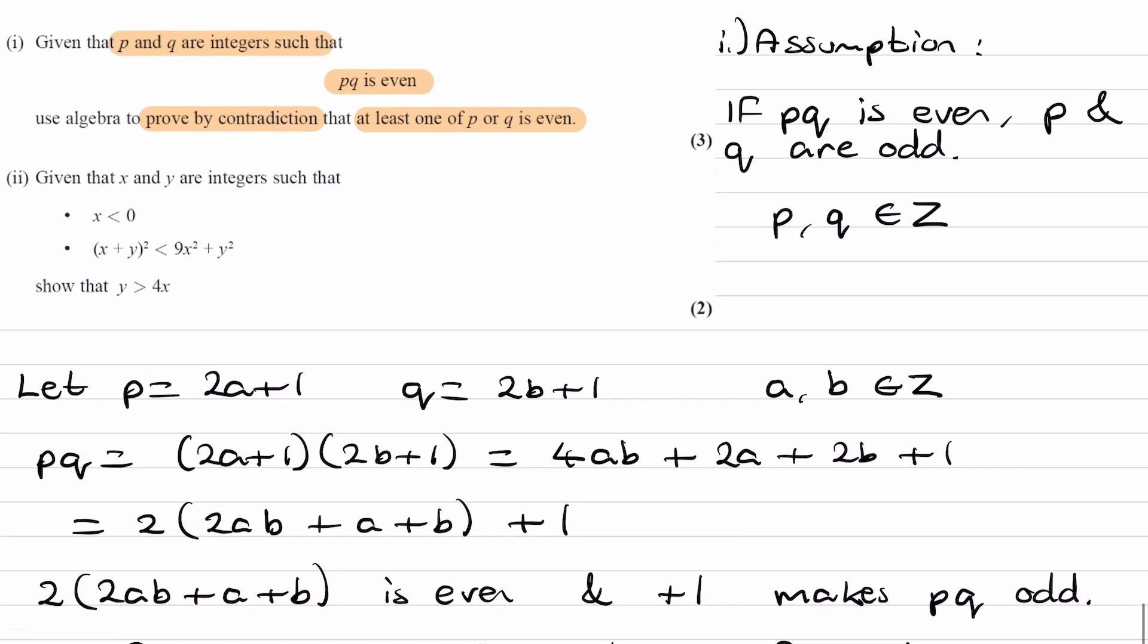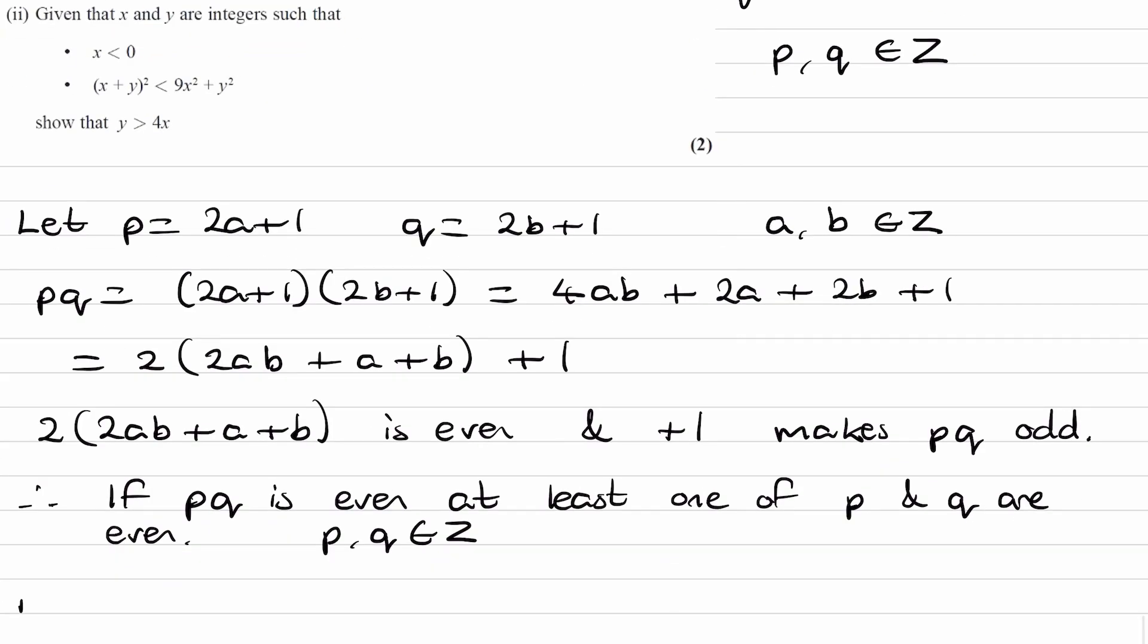Okay, so then on to part 2. Given that X and Y are integers, such that X is less than 0, X plus Y squared is less than 9X squared plus Y squared, show that Y is bigger than 4X.